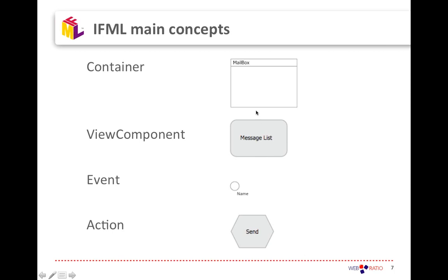The other big actor in IFML is the concept of action. An action is a representation of a binding from the user interface to the business logic — it is simply a reference to some description of business logic behavior described somewhere else, typically in other models, but it could also be a reference to source code or a textual description of the action.